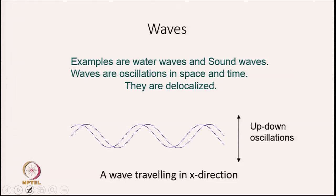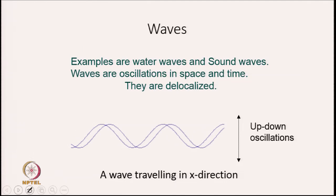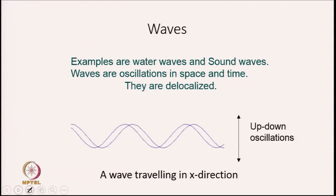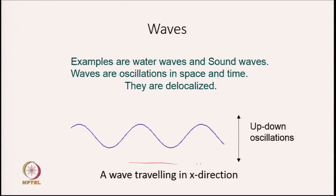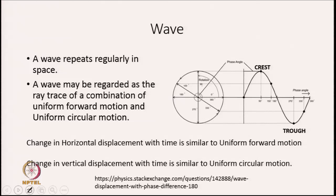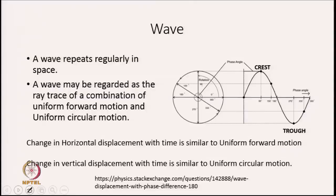What are waves? You must have seen water waves and sound waves. Waves are basically oscillations in space and time. They are delocalized — they cannot be located. With time, a wave travels in the x direction with up-and-down oscillation. A wave repeats regularly in space. A wave may be regarded as a combination of uniform forward motion and uniform circular motion.